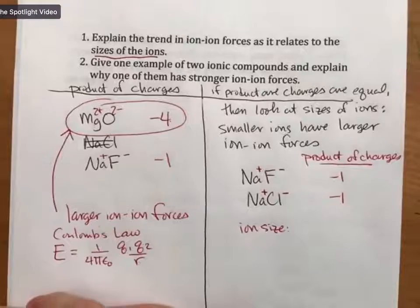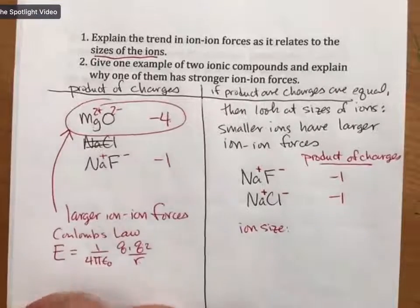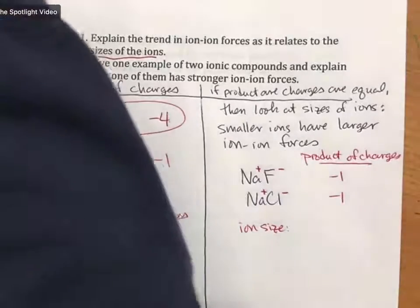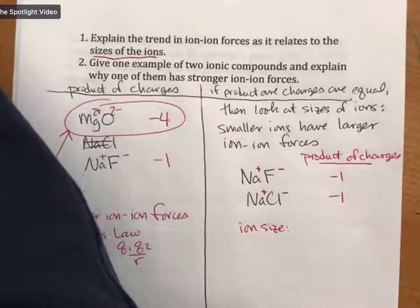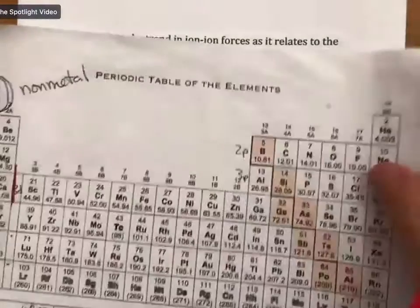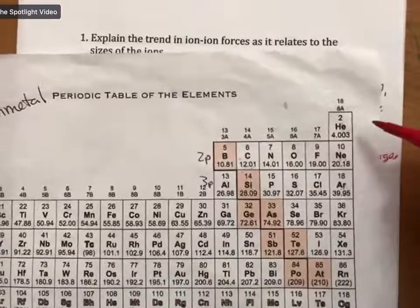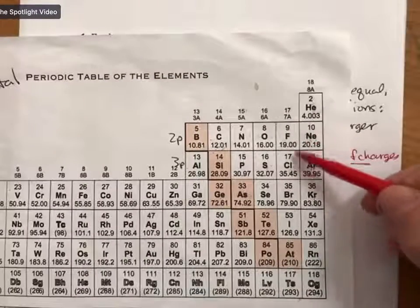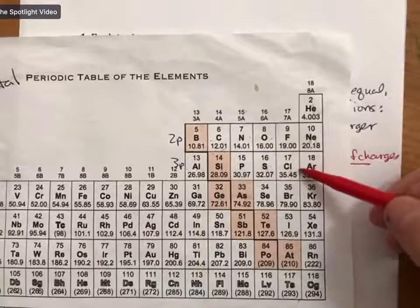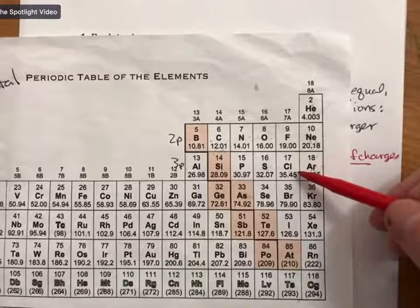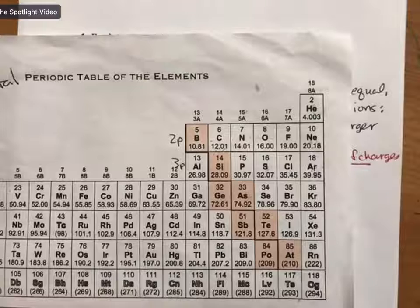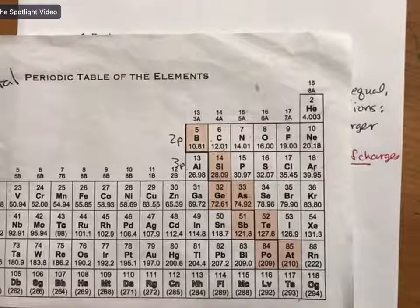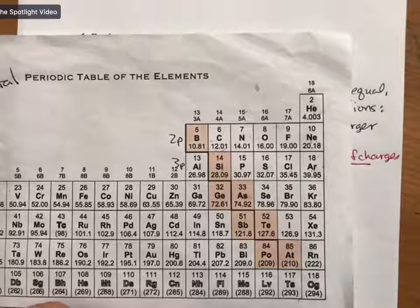So, then we look at ion size. And this comes back to our trends in ions and the periodic table, which is around here somewhere. There we go. So, my question for you, well, the sodium is the same, so we don't have to worry about that, but fluorine or chlorine, just talking about the atoms, which one is smaller, fluorine atom or chlorine atom? Do you remember?